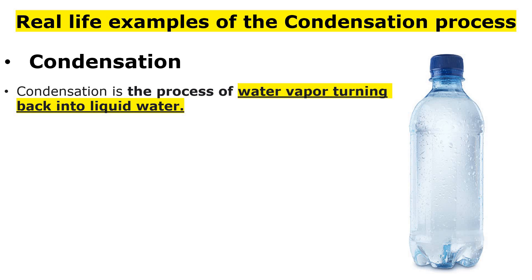In the case of boiling water, we increase the temperature of the water. We know that water boils at 100 degrees Celsius. As we increase the temperature, the liquid water converts into the gaseous phase. But in the case of condensation, we reverse this process — instead of increasing the temperature, we are decreasing the temperature.